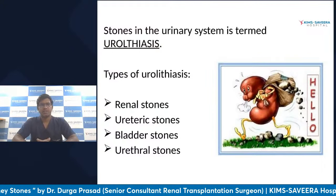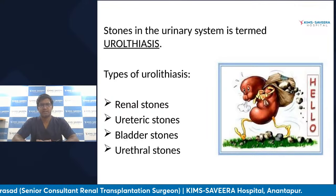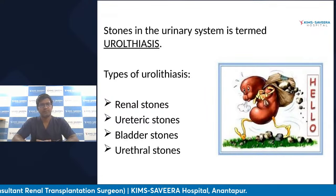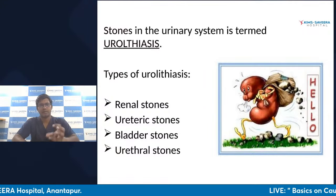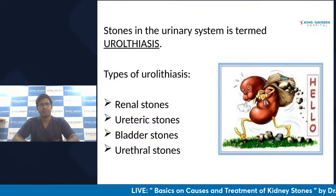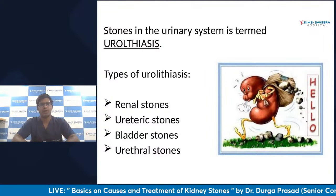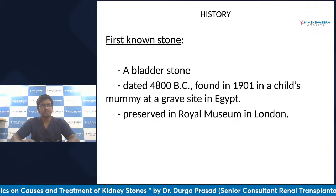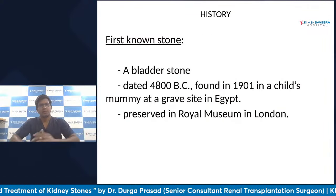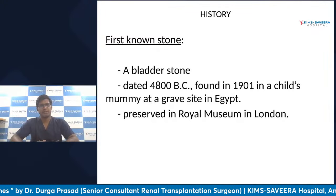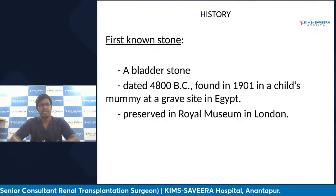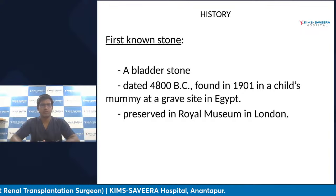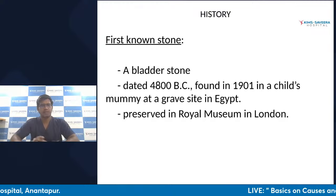Stones in the urinary system are called urolithiasis. There are different types of stones associated with the urinary system. Stones can be in the kidney, in the ureter, in the bladder, or in the urethral passage — altogether we call it urolithiasis. Stones are a very well-known disease since the very past, since 4800 BC. The first stone was identified in a mummy at a gravesite in Egypt, which was a bladder stone.